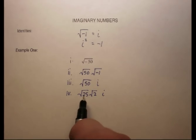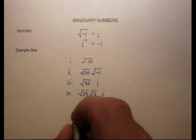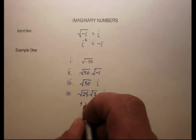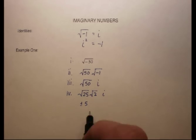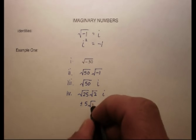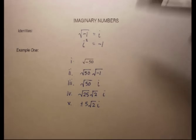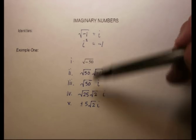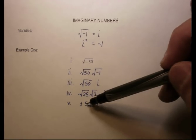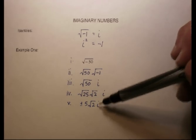I chose 25 and 2 because the square root of 25 is a perfect square. So I'm going to get plus or minus 5. Square root of 2 doesn't simplify any further, and i just comes down there. So my answer is the square root of negative 50 is equal to plus or minus 5 radical 2i.